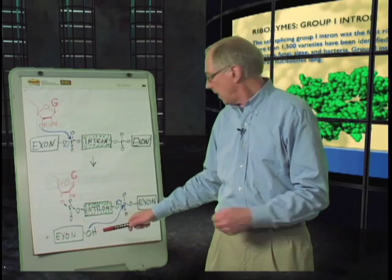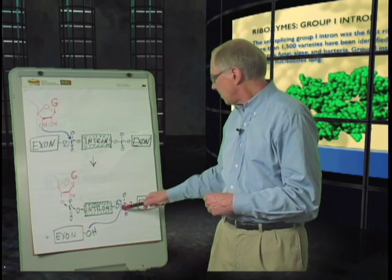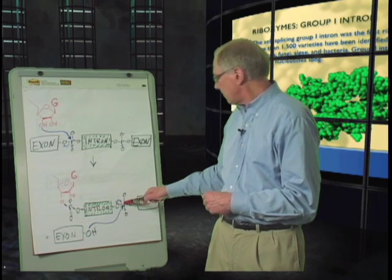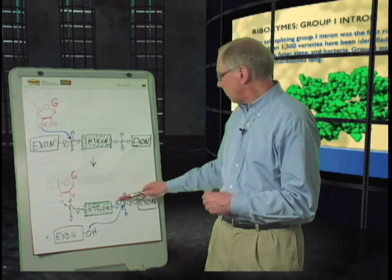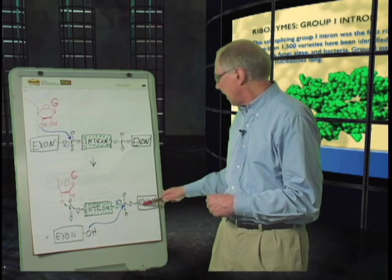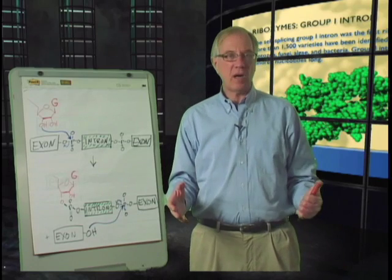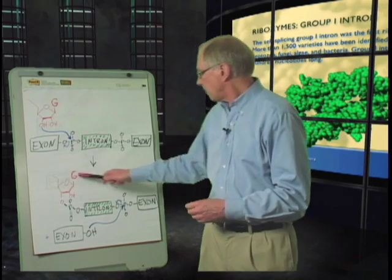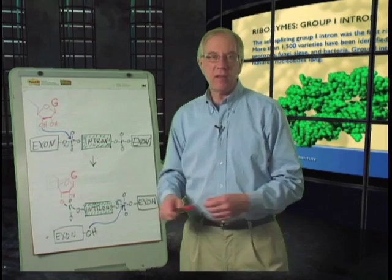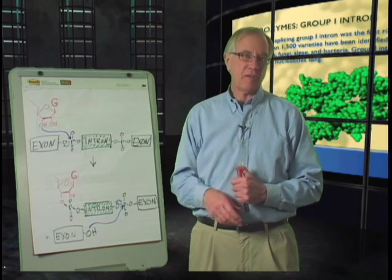And exactly the same kind of a chemical step, if it occurred now between this exon and the downstream splice site, would result in ligation of the exons and release of the intron RNA with this diagnostic guanosine at its five prime end.